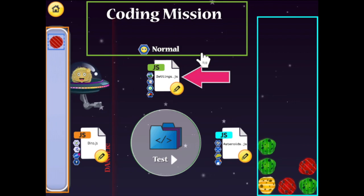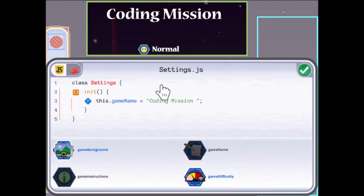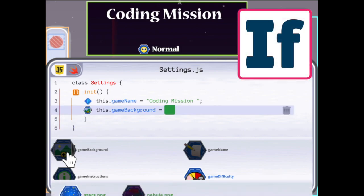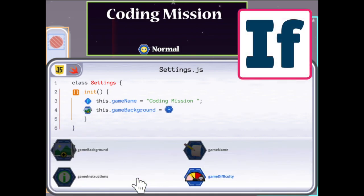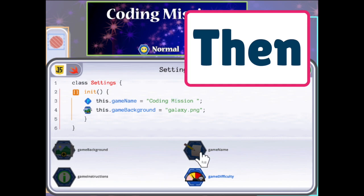First, open the game settings and take a look at the code. You can add to it or change it. For example, if you apply the galaxy background, then the background will change colors.